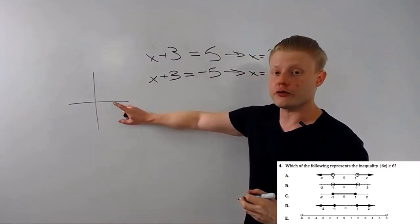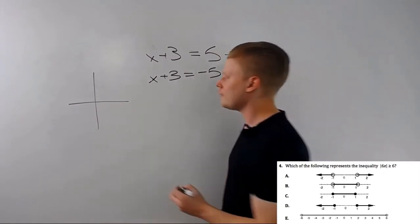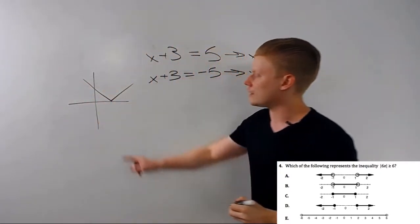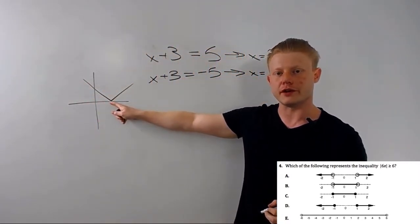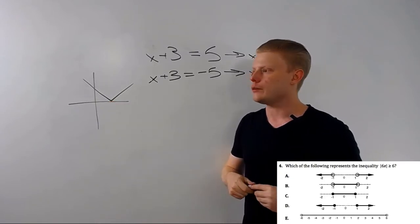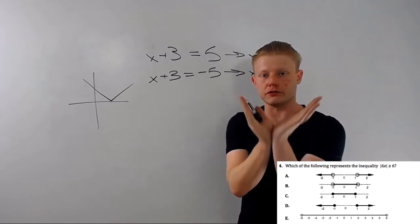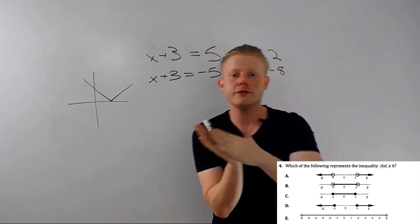So remember from Algebra 2, your graph of an absolute value, I'm just going to kind of sketch one out here, looks like this. It looks like a v. It's reminiscent of a parabola. Like a parabola, where the x squared makes everything positive, turns the negative into positive, which keeps it from being a line, it turns it into a curve.